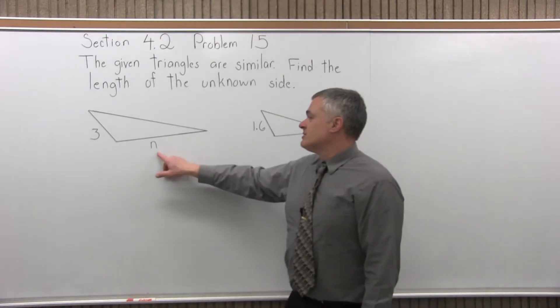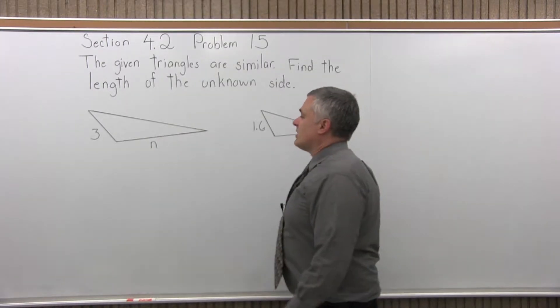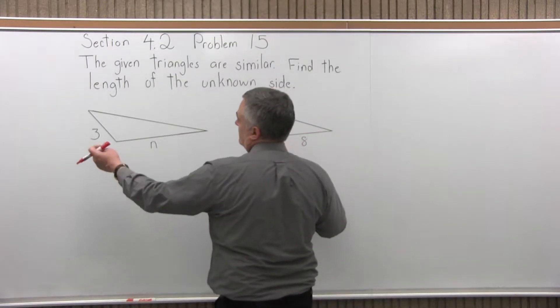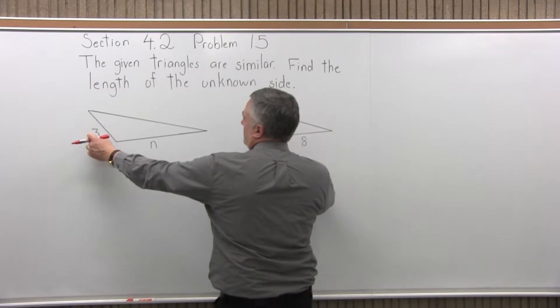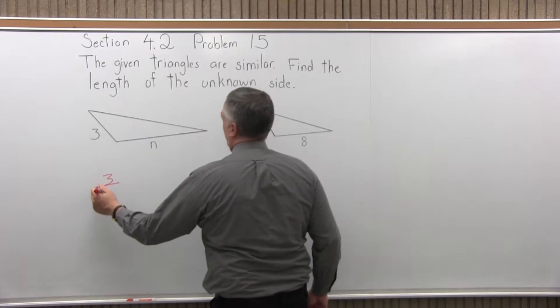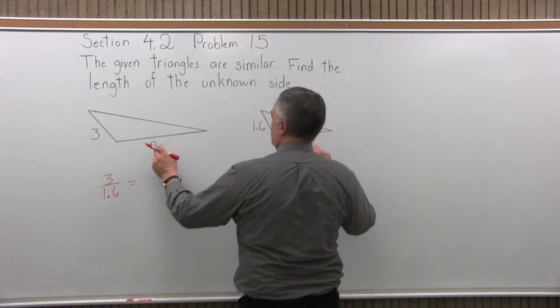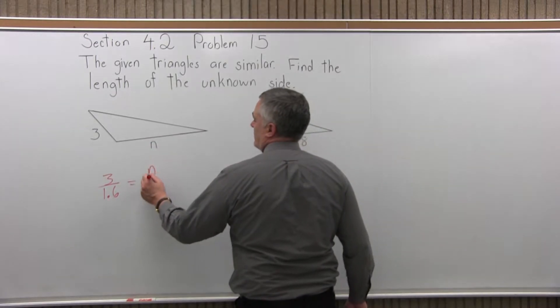So we have two triangles. The unknown side is the bottom of the left triangle. So what we'll do is set up a proportion. So the left side over the left side you'll have 3 over 16. Oh sorry, 1.6. Missed the decimal at first. Set that equal to n over 8.